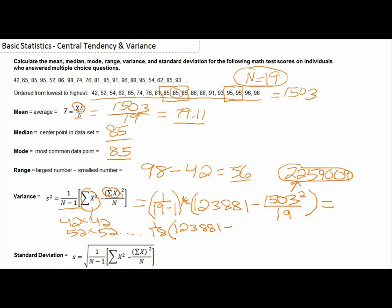So 2,259,009 divided by 19 is 118,895.21. We still have quite a few numbers left to calculate, so we still have 1 over 18 multiplied by whatever our differences that we have within these brackets. So if we subtract those two numbers, we end up getting 4,985.79.